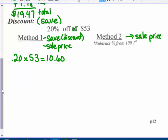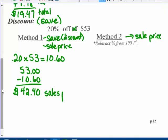Take the $53 and subtract the discount. Subtract $10.60 and I would be paying $42.40. That's the sale price. $10.60 was the discount, the money I'm not taking out of my pocket.